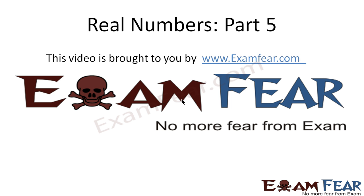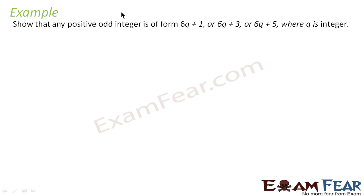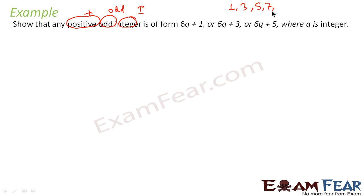We'll take one more example where we use this algorithm. We have to prove that any positive odd integer — positive odd integer means numbers such as 1, 3, 5, 7, 9, because we are not taking the negative part and we are talking only about odd integers — is of the form 6q+1, 6q+3, or 6q+5, where q is an integer.